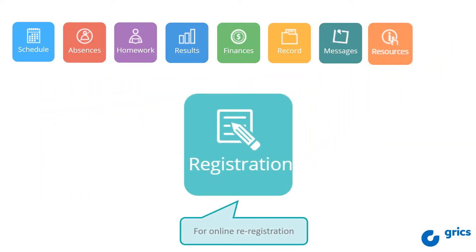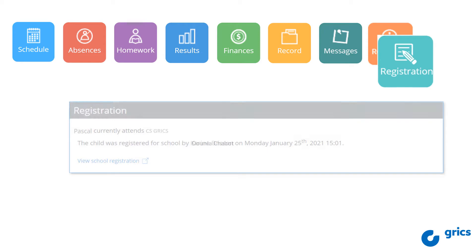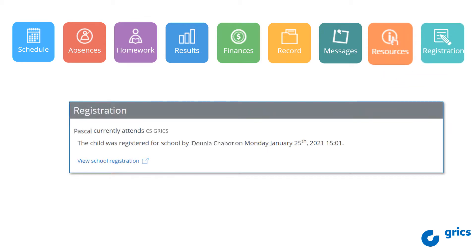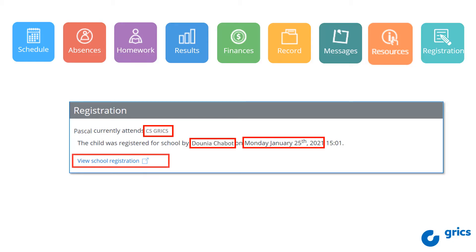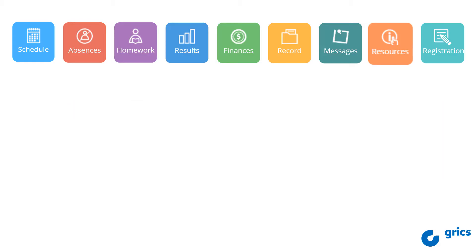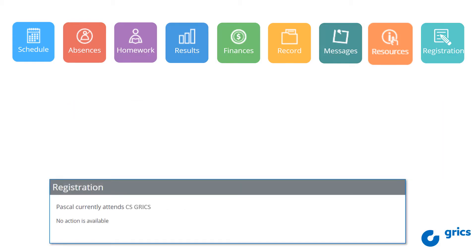If available, the Registration tile allows you to register your child for the next school year. When it is the re-enrollment period for the school and this tile is active, you can complete the information requested for your child's next school year. Once completed, this section shows you the name of the school board attended, when the registration was made, and by whom. You can then consult the registration request that was submitted. However, it may be inactive and a message will tell you that no action is available.